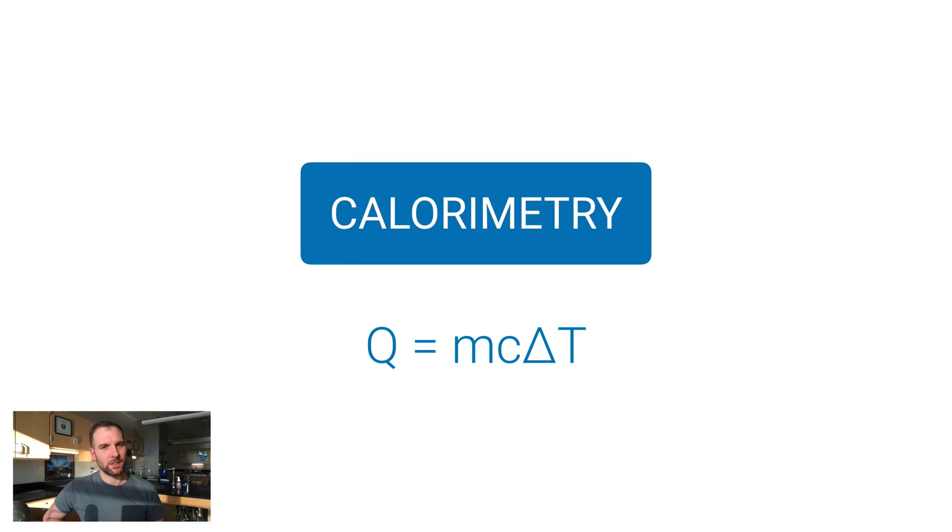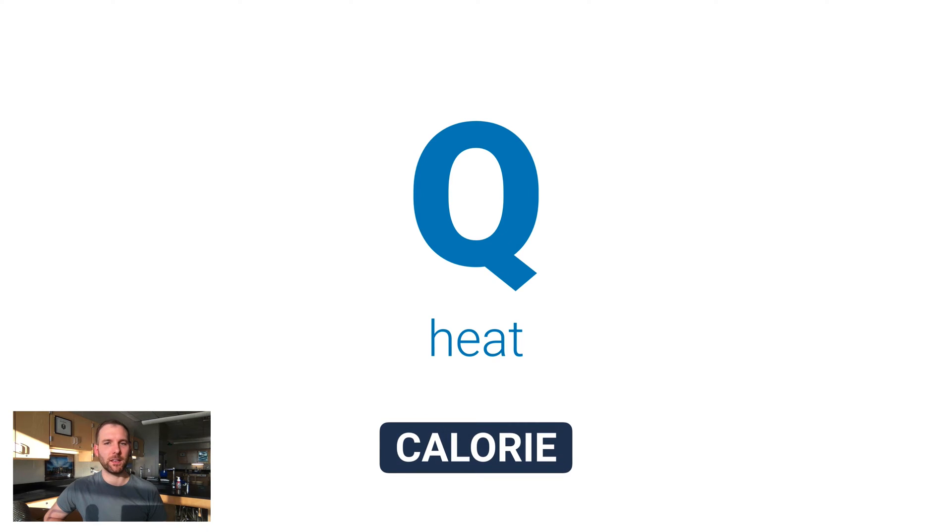Now in calorimetry we use this famous equation. You may have seen this in middle school science or in introductory physics: Q equals mc delta T. We're gonna get back to this a little bit later, but let me first just focus on Q. Q is heat, which is different from temperature. Temperature measures the speed of particles. Heat is a form of energy. So Q as heat is often expressed in units of calories.